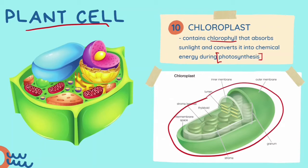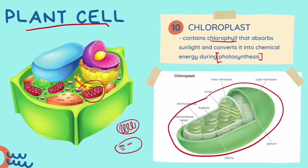This structure is very similar to an organelle we've learned before — the mitochondria. But how do we differentiate the two? The mitochondria normally looks like a hot dog and has a folded inner membrane. The chloroplast, on the other hand, has a stack of thylakoids inside it, giving it a distinctly different internal appearance.